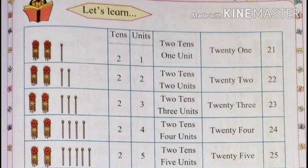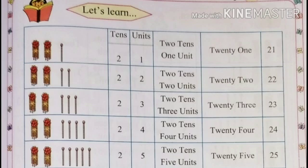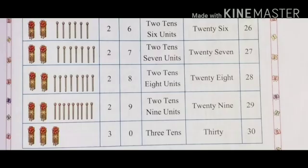Two bunches of math sticks means 20 math sticks. With 5 math sticks: 25. That is 2 tens and 5 units — 25. The spelling of 25 is T-W-E-N-T-Y (20) F-I-V-E (5): 25.